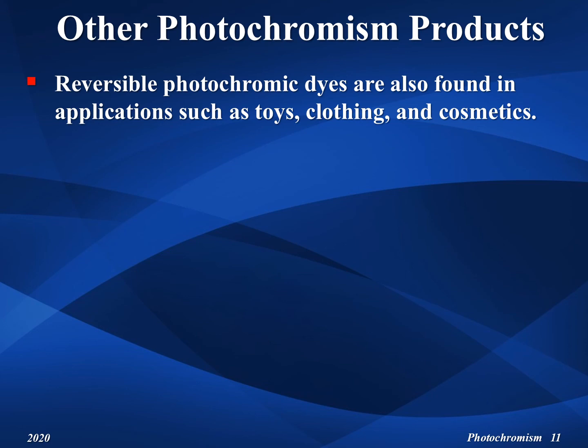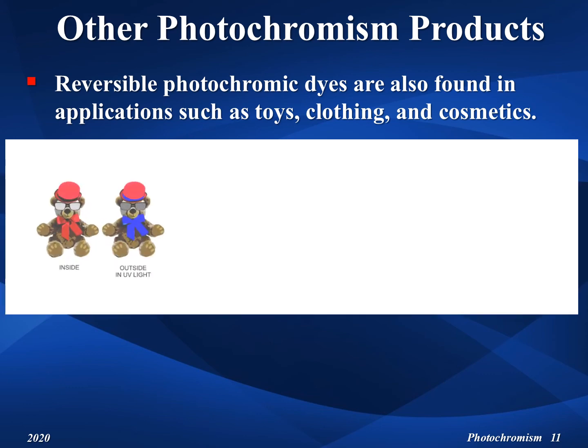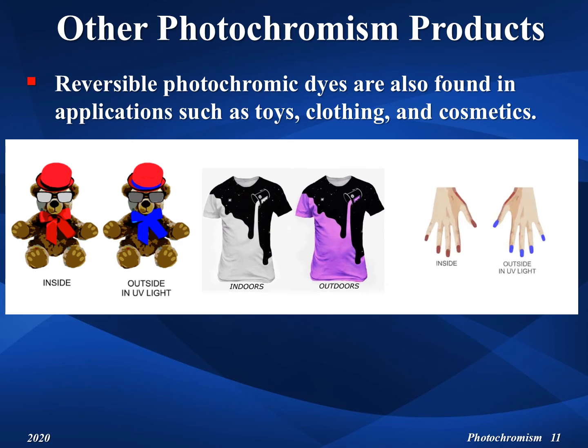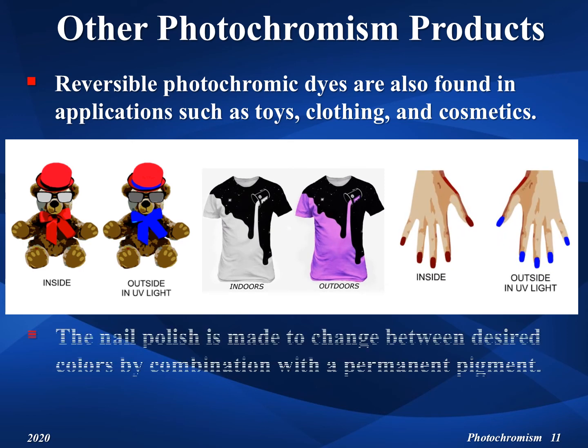Reversible photochromic dyes are also found in applications such as toys, clothing, and cosmetics. Photochromic nail polish is made to change between desired colors by using combinations of permanent pigments.